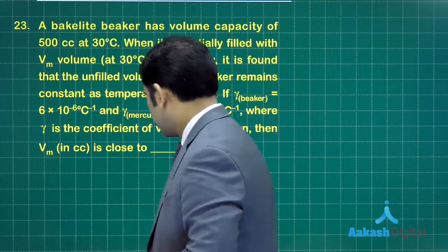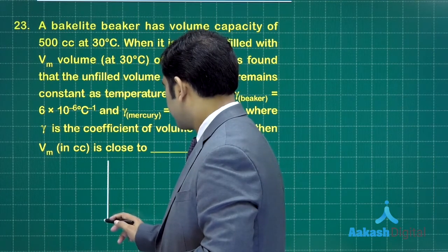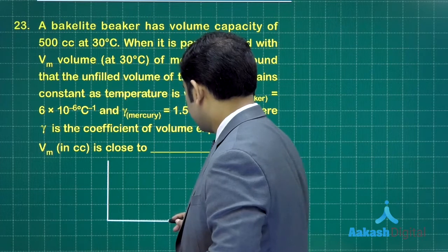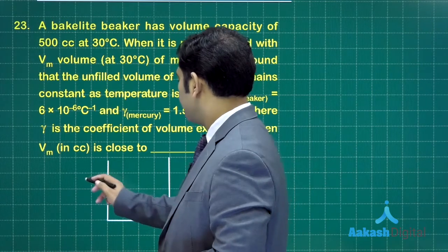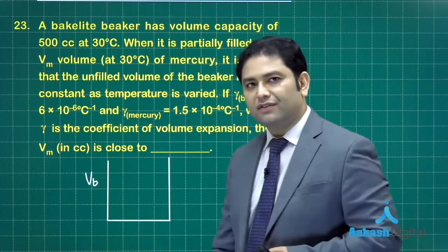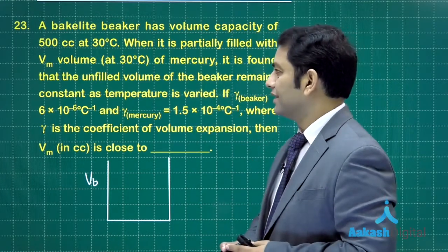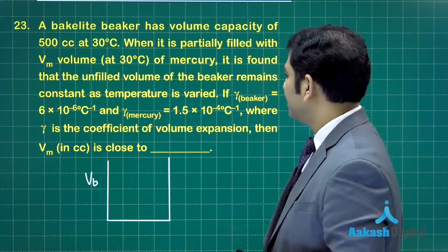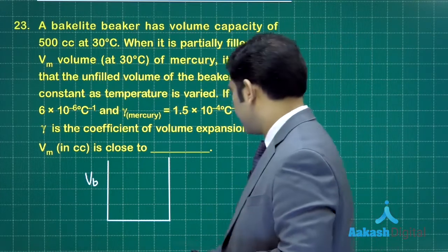Let's start with a figure. Something like this, this is that particular bakelite beaker. The total volume, let's write it by V sub b, the volume of the bakelite beaker, and the temperature has also been given, 30 degrees.